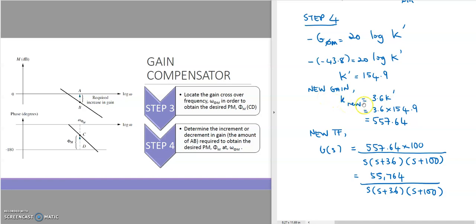The new gain K equals the original gain 3.6 multiplied by K′. Before gain adjustment, K was 3.6; after gain adjustment, we multiply by K′, giving a new gain K of 557.64. The new transfer function is this new gain K multiplied by 100, divided by the three poles. This is our new transfer function after gain adjustment, maintaining the required overshoot of 9.5 percent with the required phase of 59.2 degrees. That's all for frequency response design via gain compensator. Thank you very much.